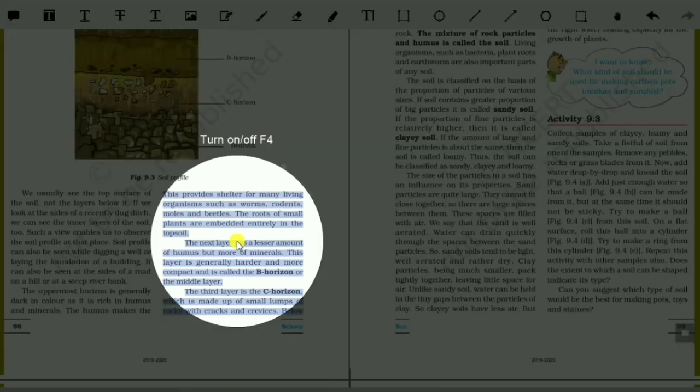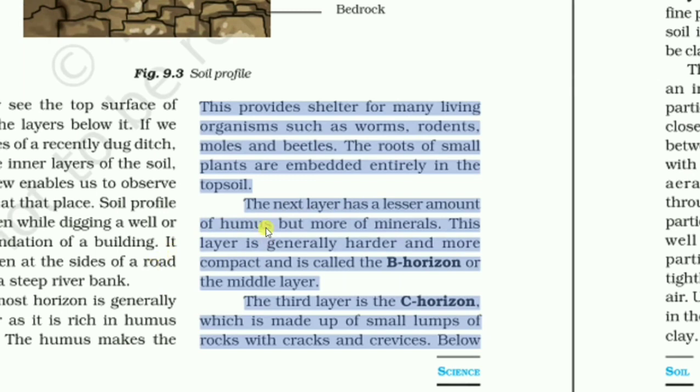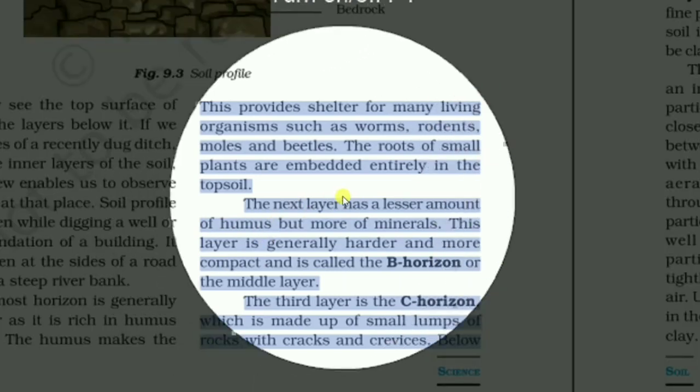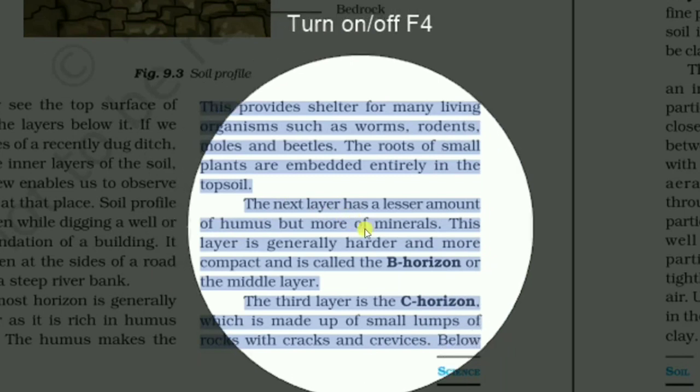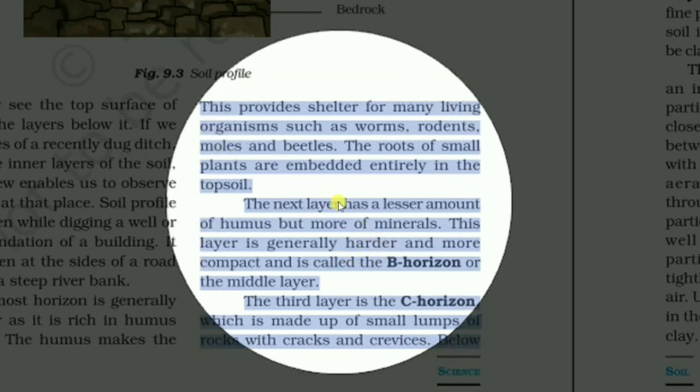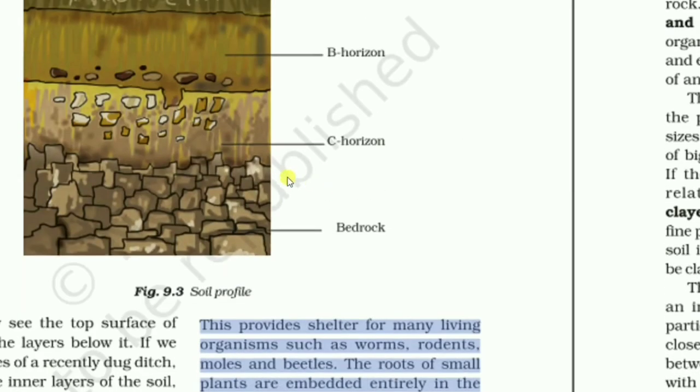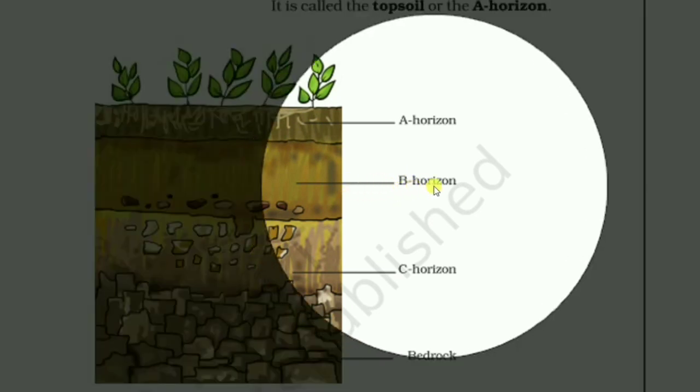This provides shelter for many living organisms such as worms, rodents, moles, and beetles. The roots of small plants are embedded entirely in the topsoil. The next layer has a lesser amount of humus but more of minerals. This layer is generally harder and more compact and is called the B horizon or the middle layer.